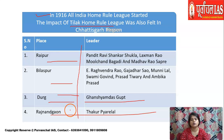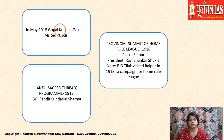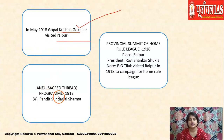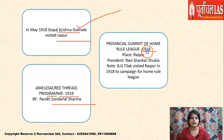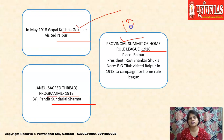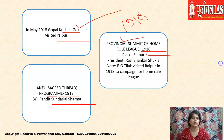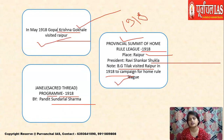In May 1918, Gopal Krishna Gokhale — the political guru of Gandhiji — visited Raipur. A janeu (sacred thread) ceremony was organized by Pandit Sundarlal Sharma for the upliftment of lower caste people. In 1918, a provincial summit of the Home Rule League took place at Raipur, with Ravi Shankar Shukla as president. Bal Gangadhar Tilak also visited Raipur to campaign for the Home Rule League. So both Gopal Krishna Gokhale and Bal Gangadhar Tilak visited Raipur.